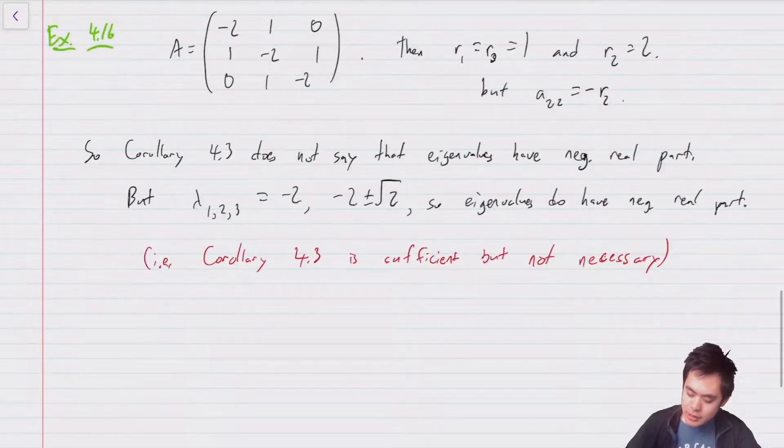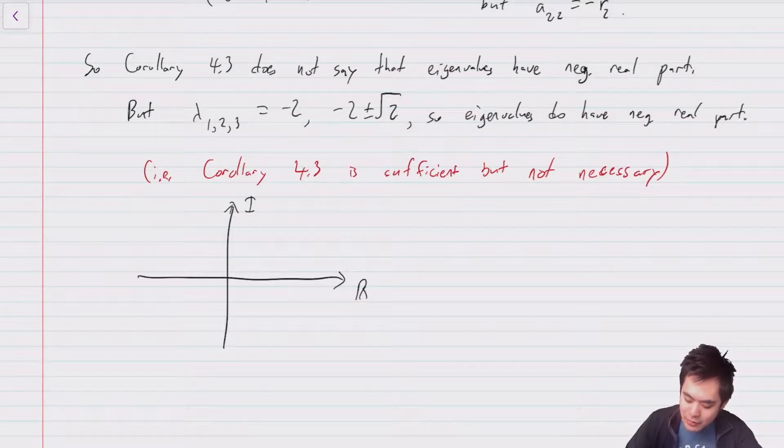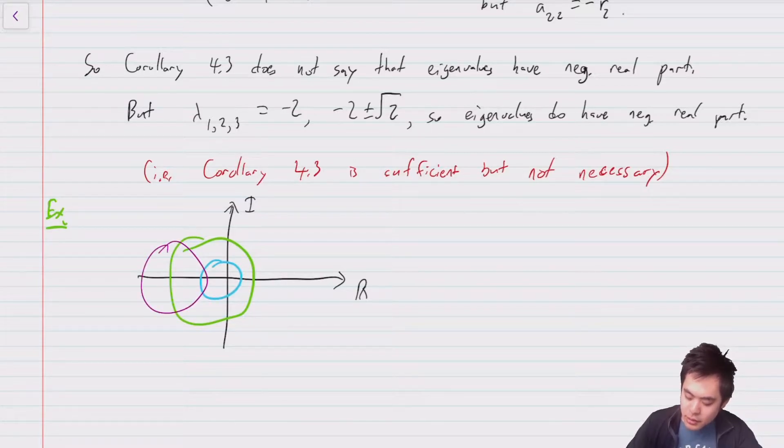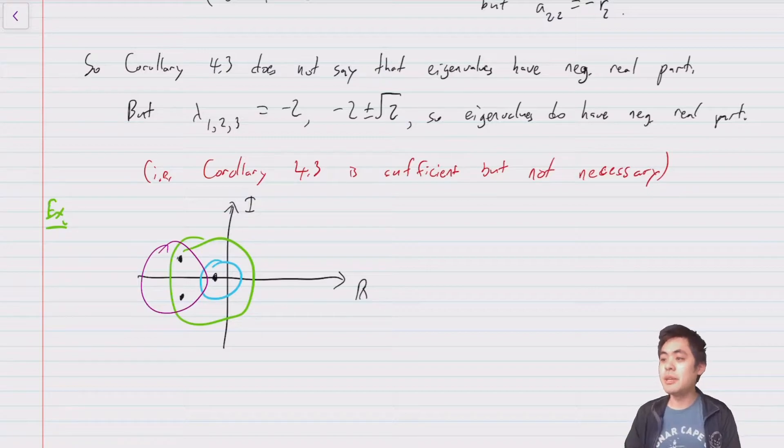So this is just saying corollary 4.3 is sufficient but not necessary. So what's happening here is you still have your complex plane and even if your disks do intersect the positive half plane, maybe all your eigenvalues still happen to be negative. So this is not necessarily, simply because the corollary doesn't apply doesn't mean you don't have negative real parts. It's only a sufficient condition.